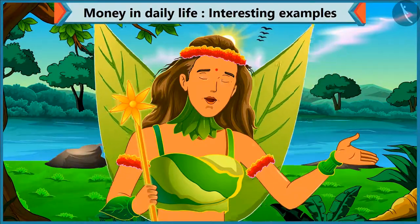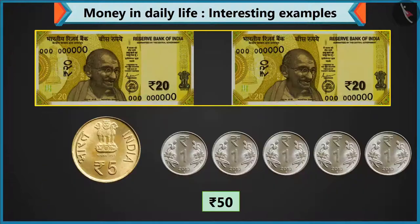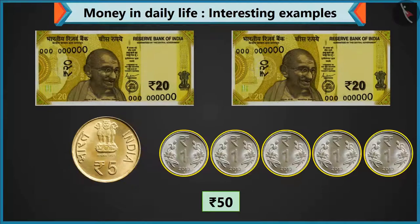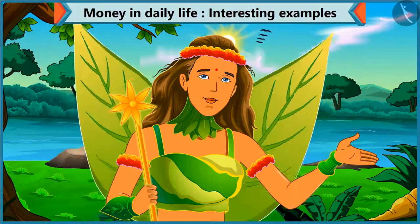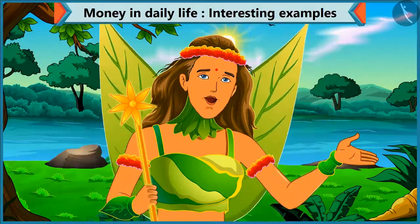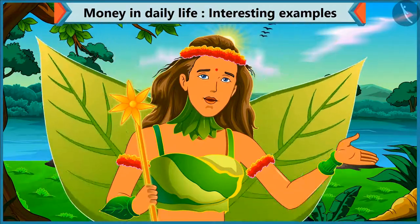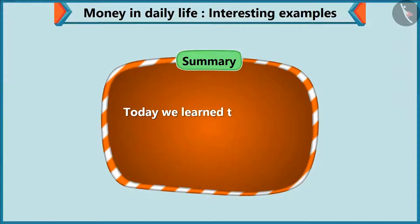So, kids, you saw that you can pay 50 rupees by adding a note of 50 or 2 notes of 20, a coin of 5 and 5 coins of 1 rupee. You can also make 50 rupees from different notes and coins. Today, Choo Choo bought a purse and a pastry for her mother. So, today we learn to make an amount by adding various notes and coins.